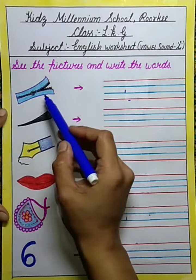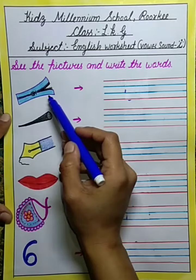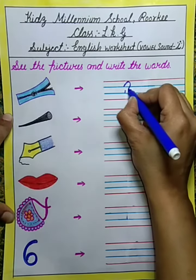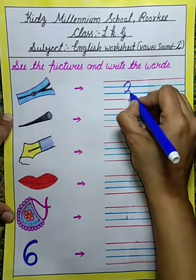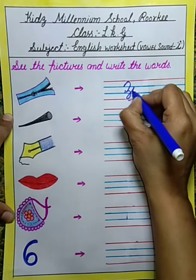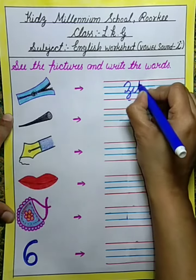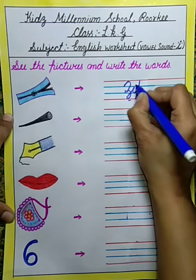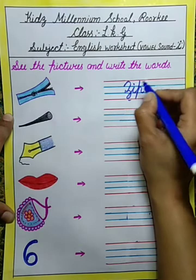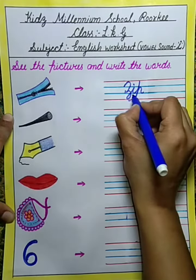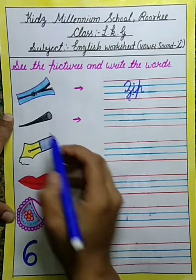This is zip. Z, I, P. Zip. Here, I is a vowel.